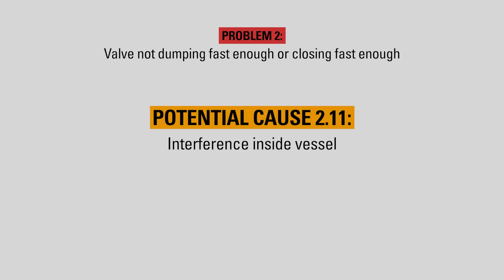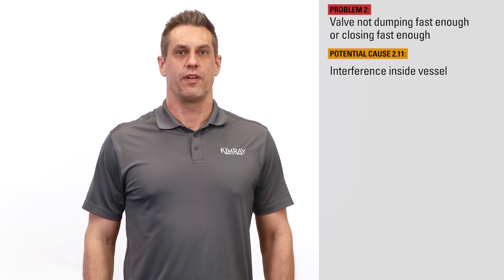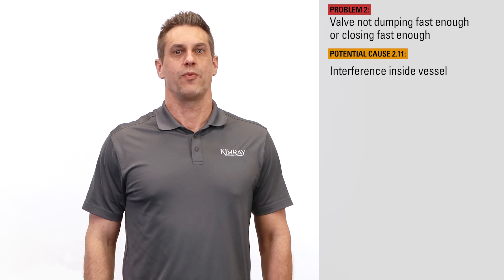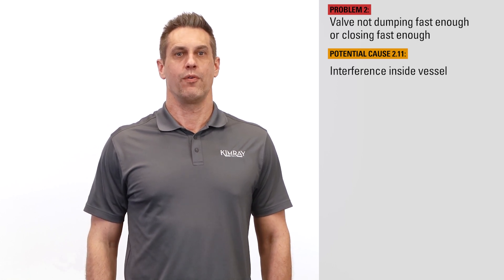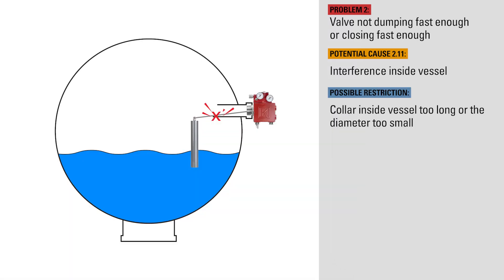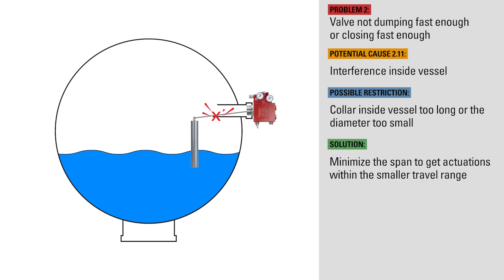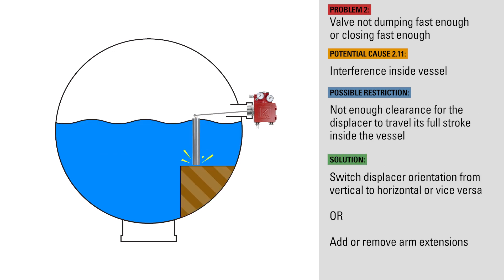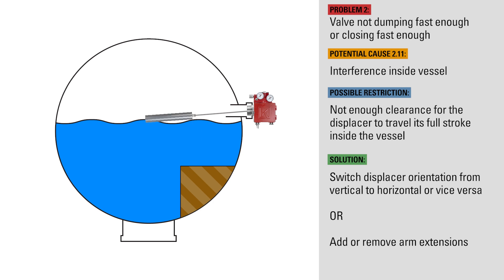If there's an obstruction inside the vessel not allowing full range of motion of the arm or displacer, this can restrict the actuation of the controller, not allowing full output or full vent flow. One possible restriction could be the collar inside the vessel being too long or the diameter too small. If this is the case, you can try minimizing the span to get actuations within a smaller range of travel. Make sure there's clearance for the displacer to travel its full stroke inside the vessel. If there isn't, you can try switching the displacer orientation from vertical to horizontal or vice versa, or adding or removing arm extensions to avoid the obstructions.